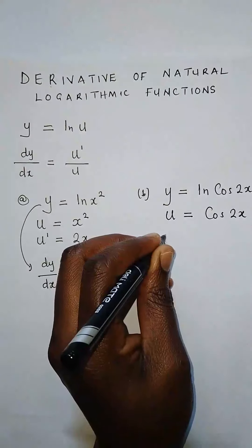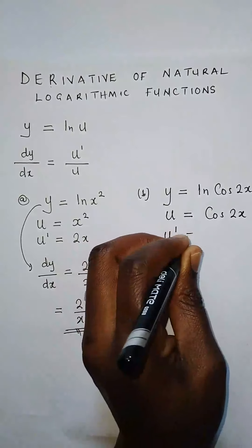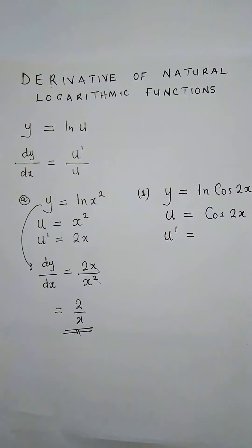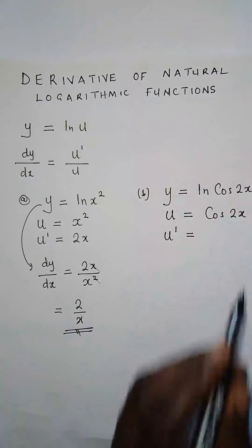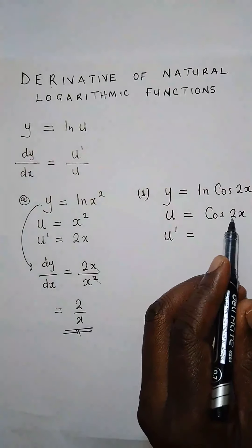So now, what is u prime? We're trying to find the derivative of cos 2x. What is the derivative of cos 2x? If you recall, given this type of trigonometric function...